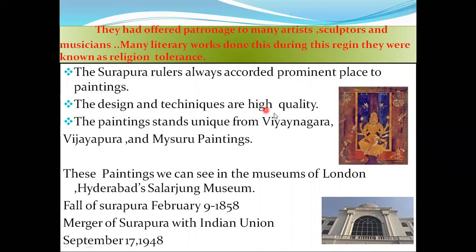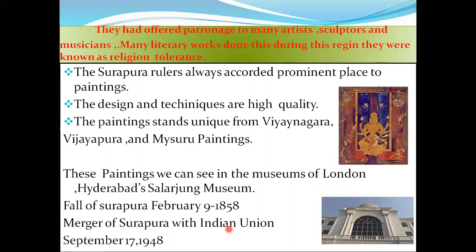The Surapura rulers gave prominence to painting, using high-quality designs and techniques. Their paintings stand unique from Vijayapura, Vijayanagara, and Mysuru painting styles. These paintings can still be seen in the Museum of London and the Salar Jung Museum in Hyderabad. The fall of Surapura was on 9th February 1858, and the merger of Surapura with the Indian Union occurred on 17th September 1948.